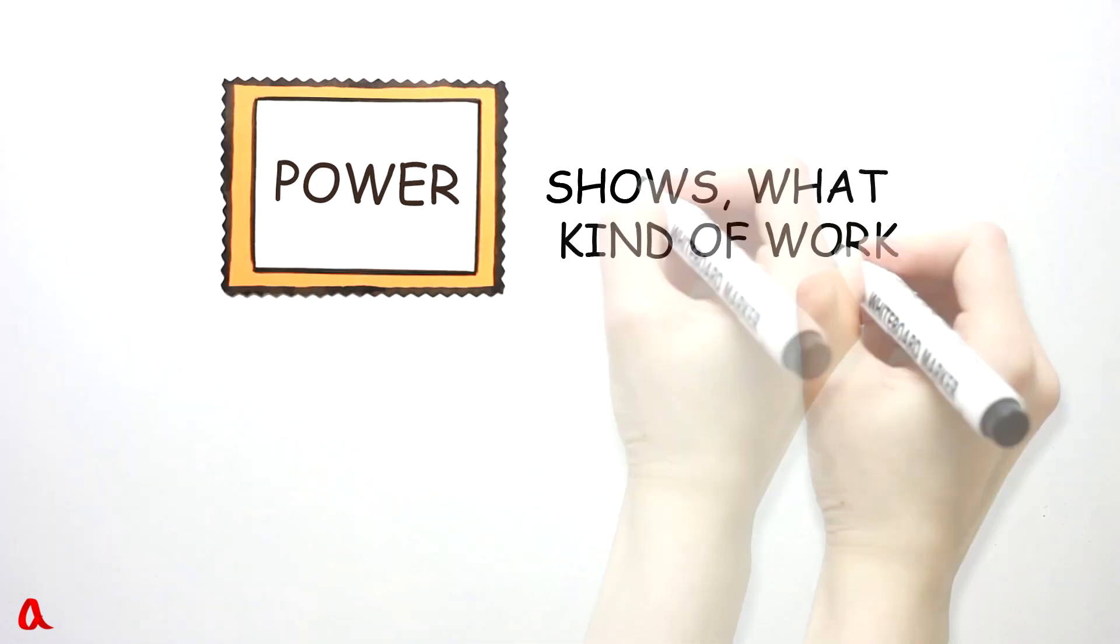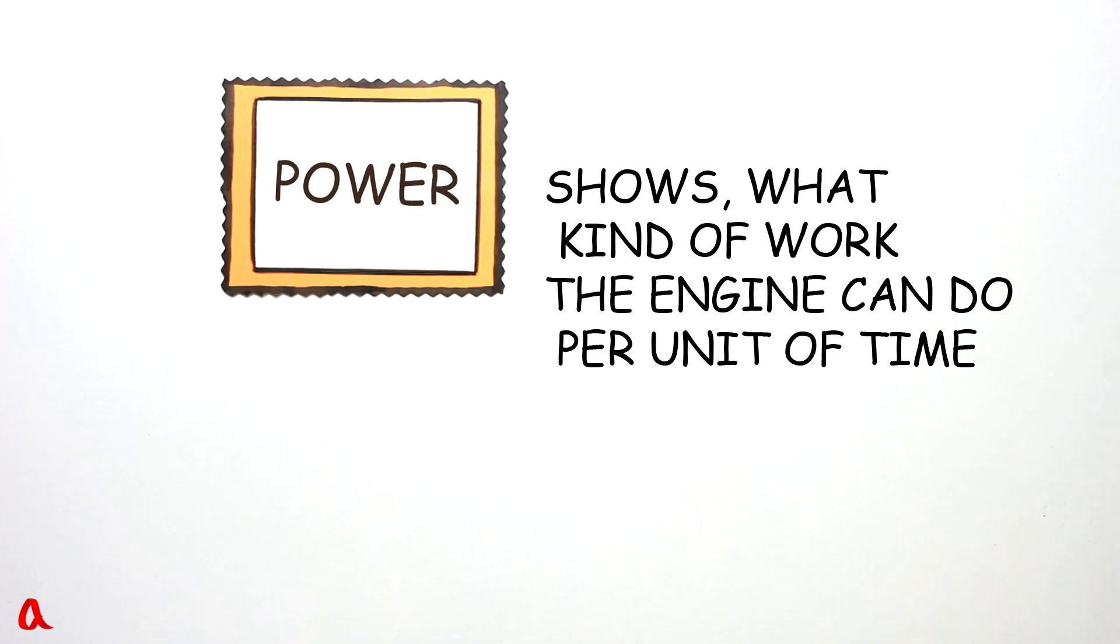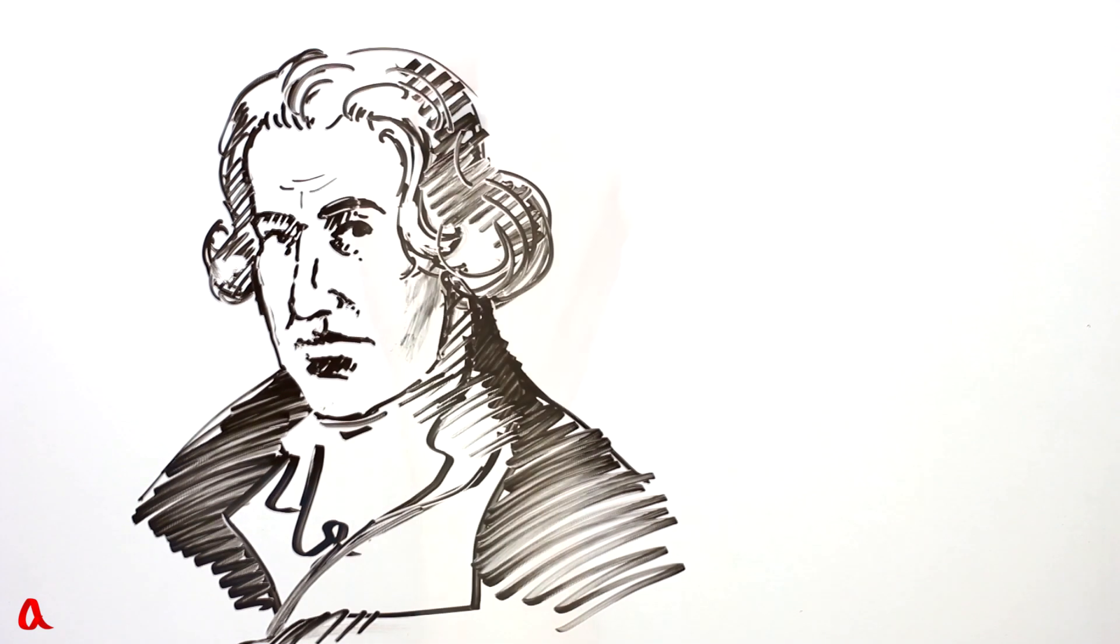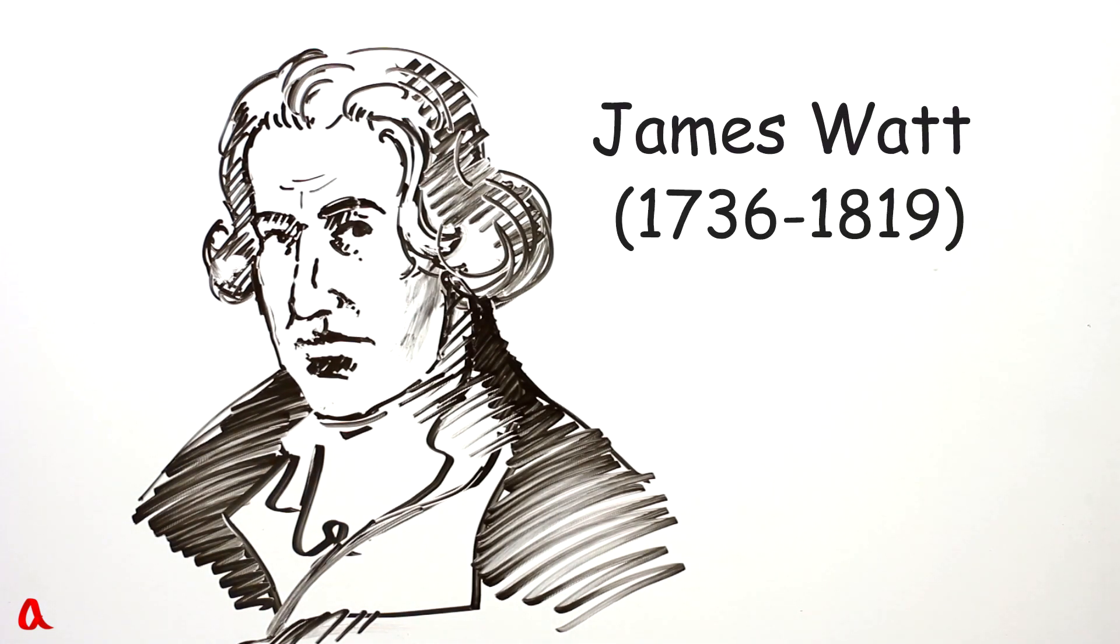Power indicates what work an engine can do in a unit of time. It is said that an engine's power equals one watt if it does one joule of work in one second. This unit is named in honor of James Watt, a Scottish inventor who introduced many important refinements into the design of a steam engine.